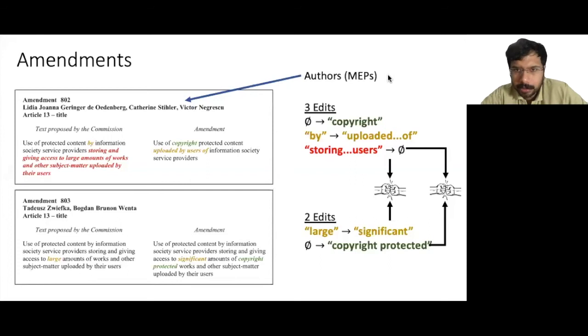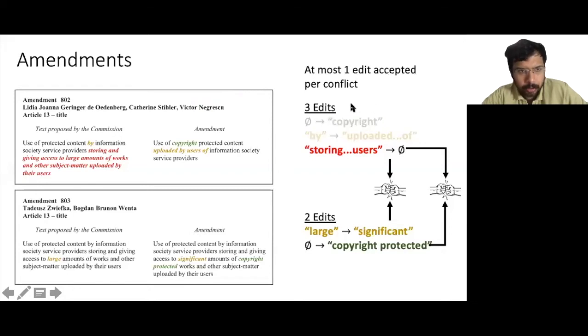Now, at most, one edit can be accepted within a conflict. In the case that we show here, it turns out that the first two edits of Amendment 802 were rejected in favor of the status quo being maintained. For the first conflict that involves this large deletion and replacement, the deletion was rejected while the replacement was kept. For the second conflict, even this insertion was rejected, and thus the two edits were rejected in favor of the status quo being kept.